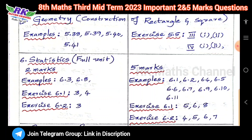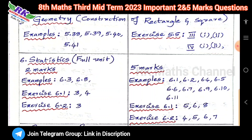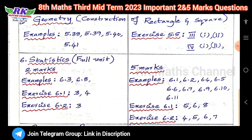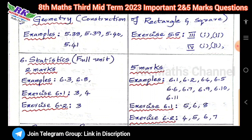For 5 marks, the examples are: 6.1, 6.2, 6.4, 6.5, 6.6, 6.7, 6.9, 6.10, and 6.11.